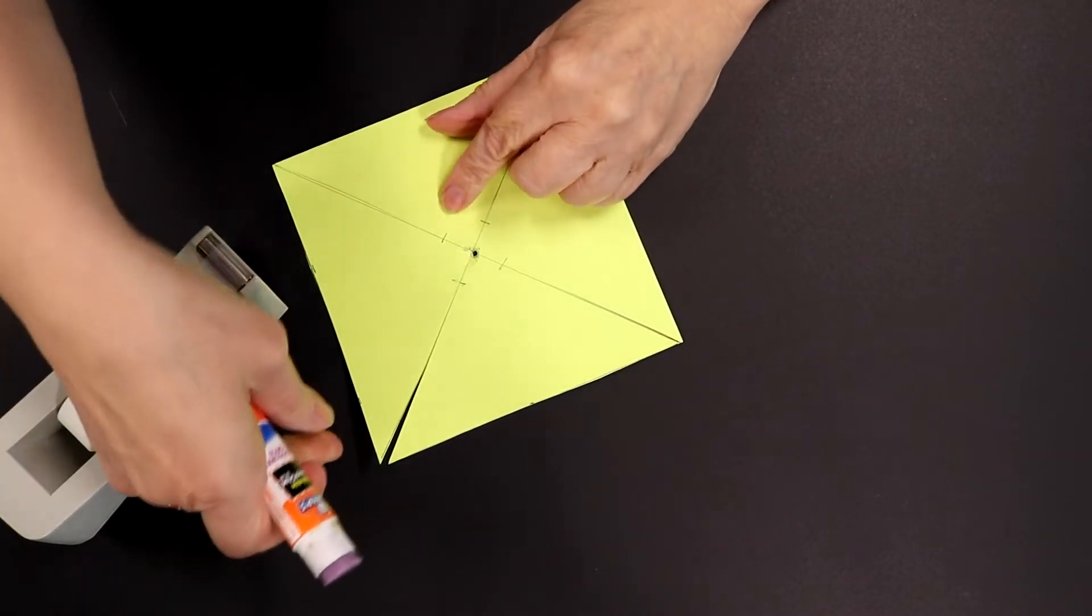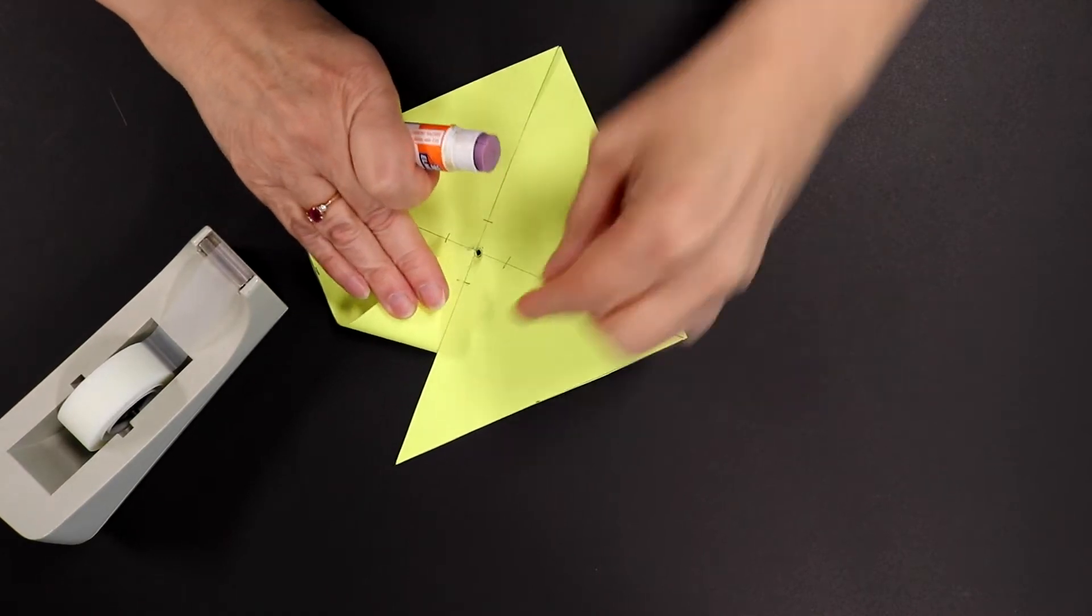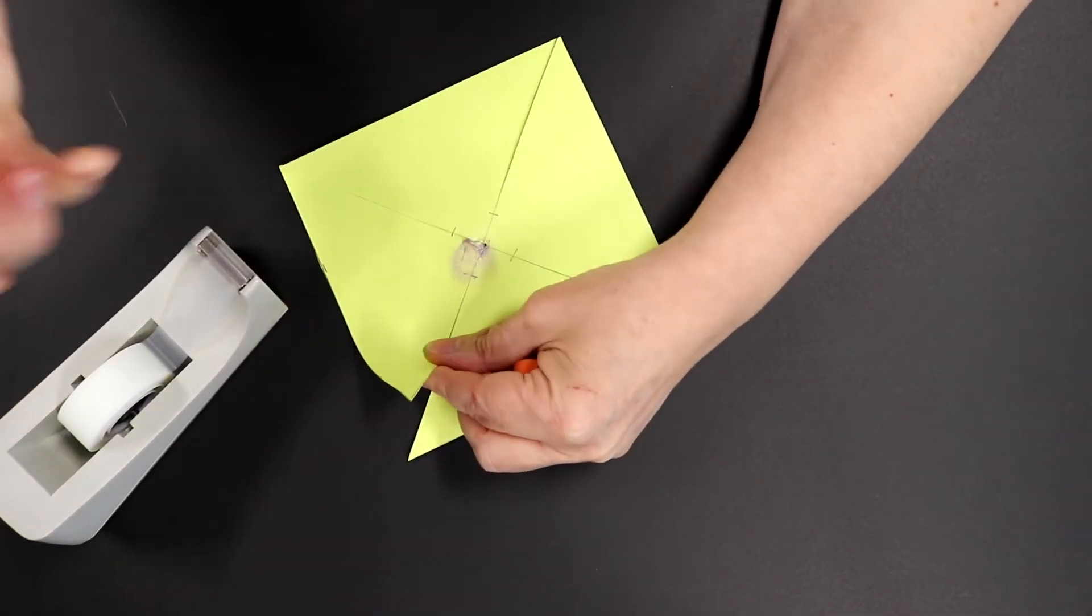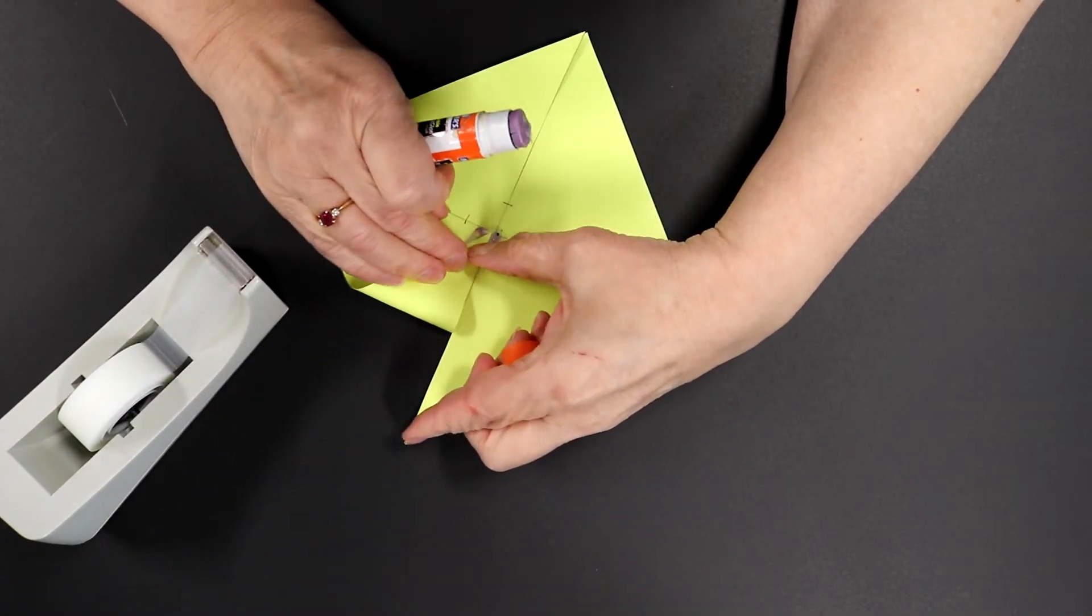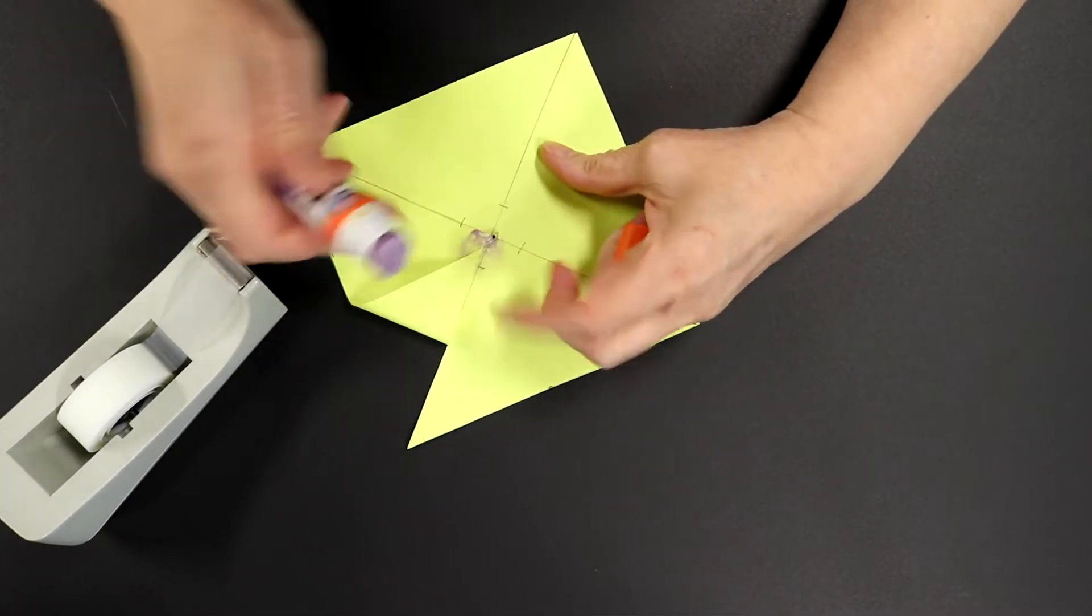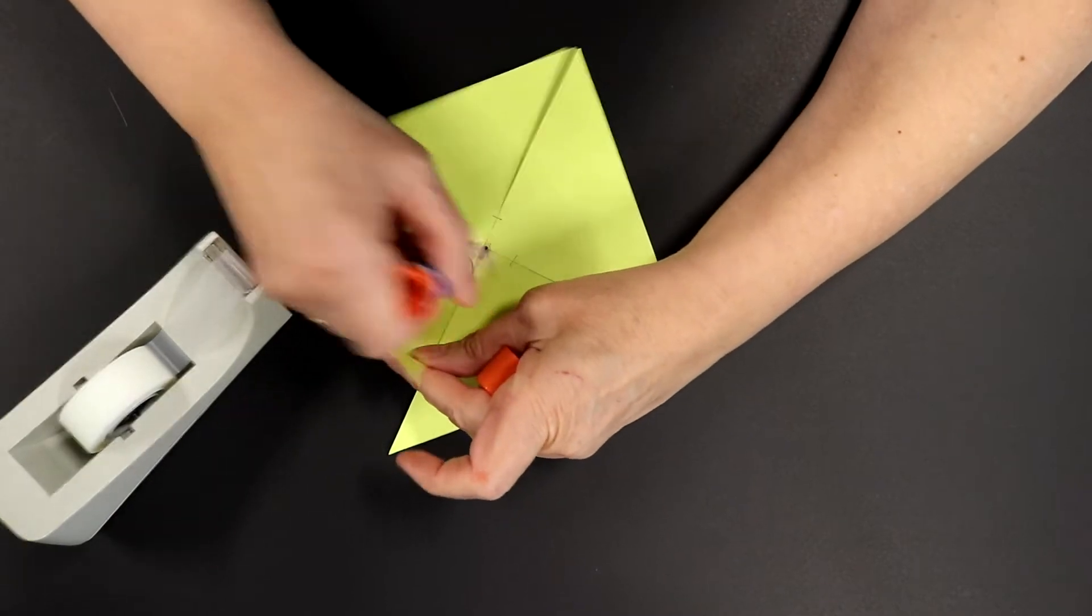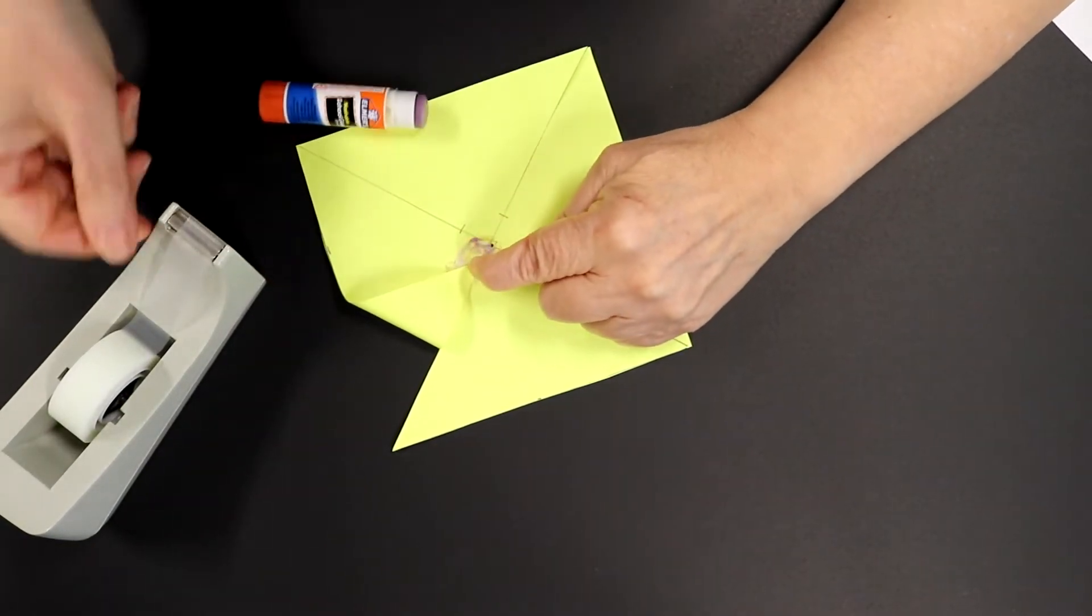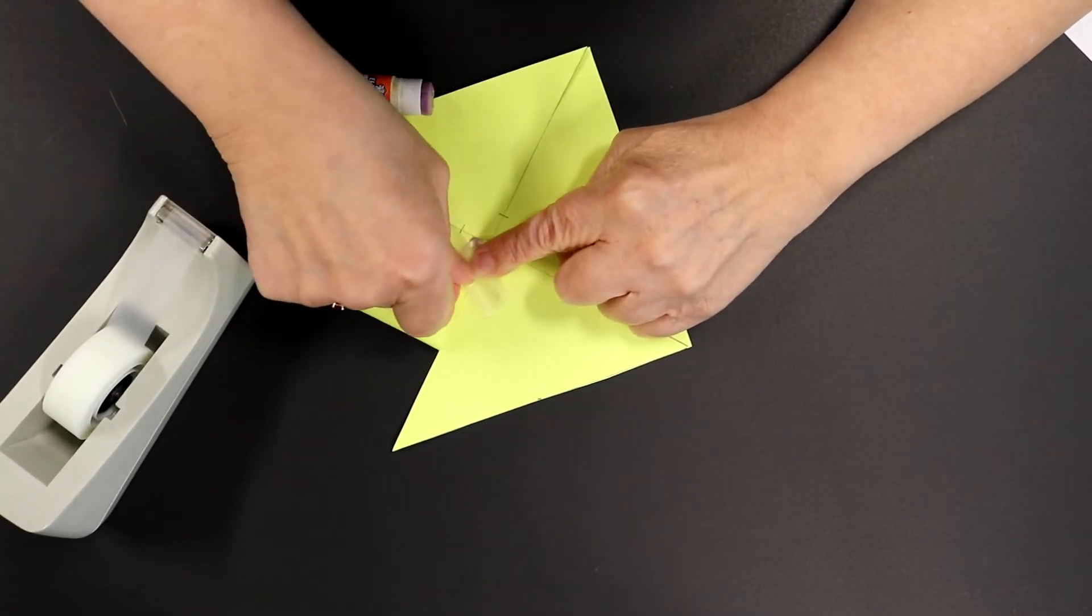Okay, now you're going to bring the corner to this line like this and you're going to put glue right here. Then you're going to glue it down. And since it takes a while for the glue to dry, I'm going to take a piece of tape and I'm going to just tape it down.